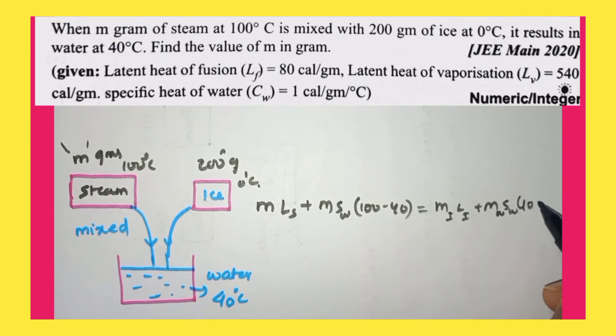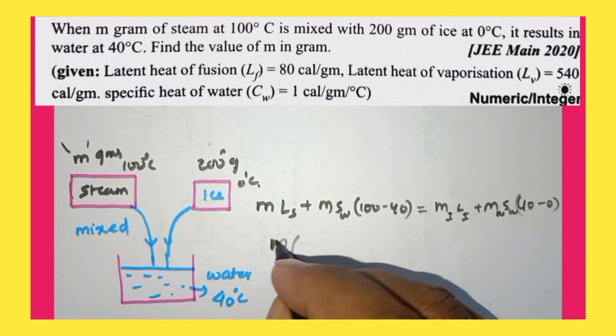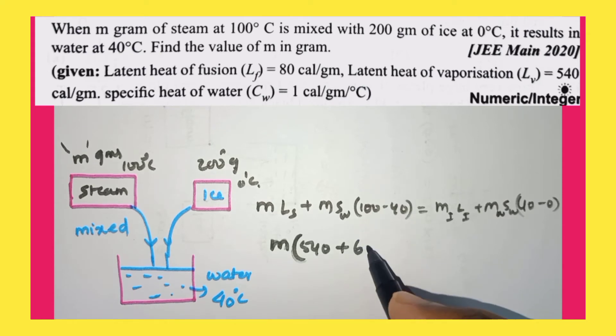So here, if you common out, you'll be getting how much? If you common out m here, latent heat of steam is 540, you know. Specific heat of water which steam is converted to water is 1, and 100 minus 40 is 60.